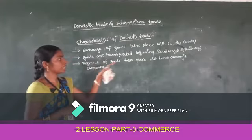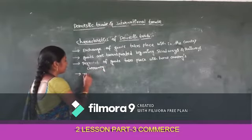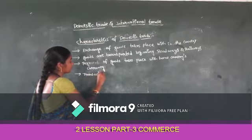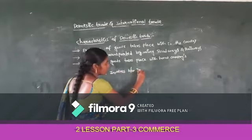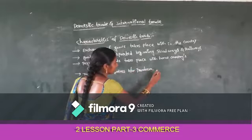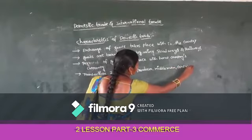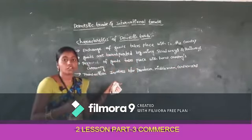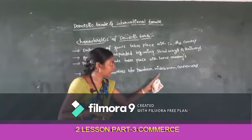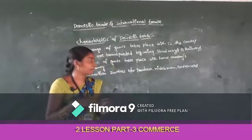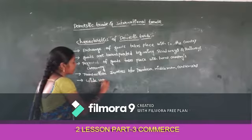In domestic trade, payment for goods takes place with the home country's currency. Transactions involve producers, middlemen, and consumers — as already mentioned in the distribution chain. The trade activity is completed between these persons, and a wide variety of products are available.